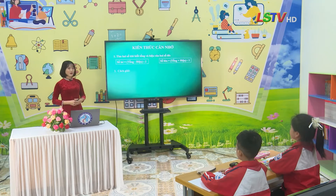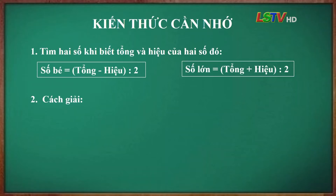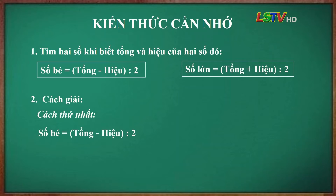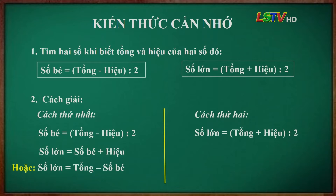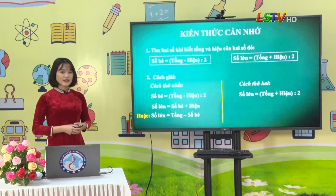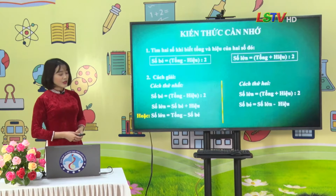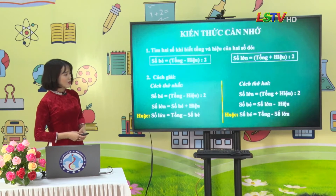Đối với bài toán tìm 2 số khi biết tổng và hiệu của 2 số đó, khi giải, các em có thể lựa chọn 1 trong 2 cách giải. Cách thứ nhất: tìm số bé trước, áp dụng công thức số bé bằng (tổng trừ hiệu) chia 2. Sau khi tìm số bé, số lớn bằng số bé cộng hiệu, hoặc số lớn bằng tổng trừ số bé. Cách thứ 2: áp dụng công thức số lớn bằng (tổng cộng hiệu) chia 2. Sau khi tìm số lớn, số bé bằng số lớn trừ hiệu, hoặc số bé bằng tổng trừ số lớn.